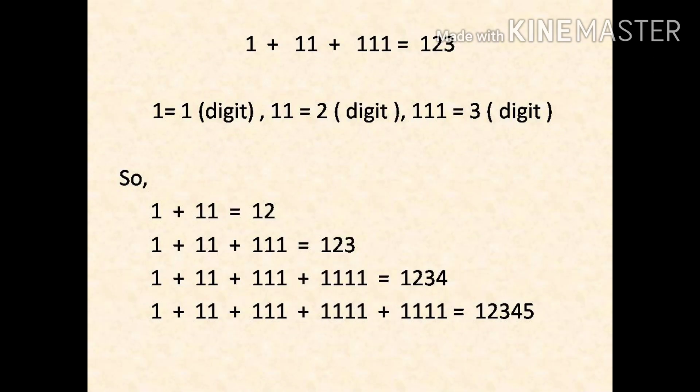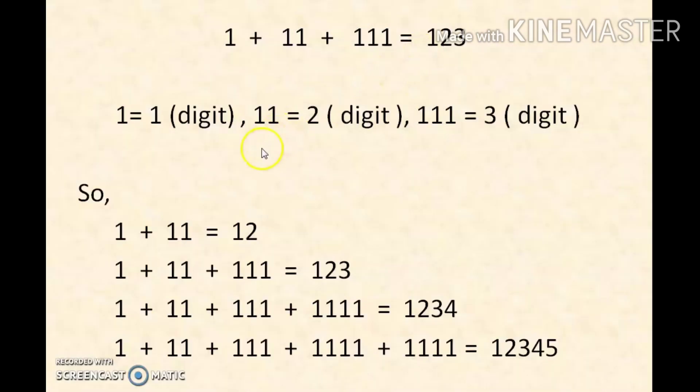Let me explain with some more examples so you can get a clear idea. First we have 1 plus 11 equals 12, right? We have 1 one plus 2 ones, so we get 1, 2, that is 12. Second we have 1 one plus 2 ones plus 3 ones, so we get 1, 2, 3, that is 123.